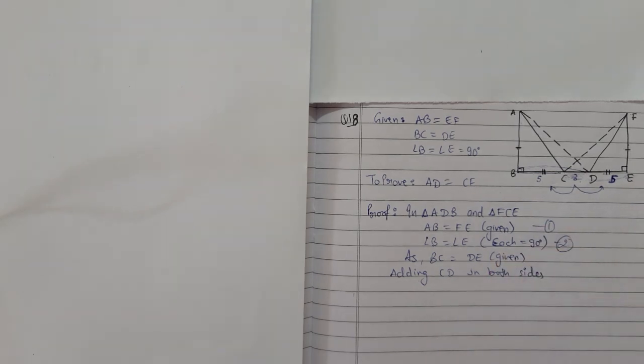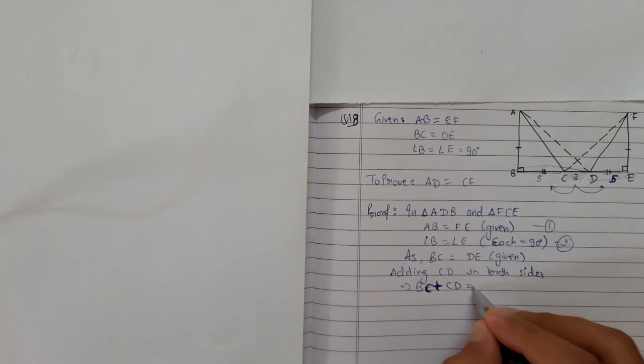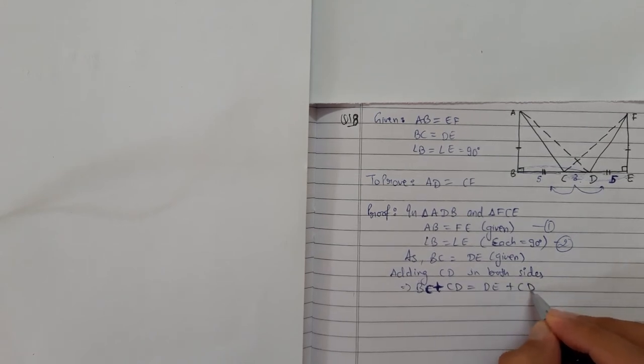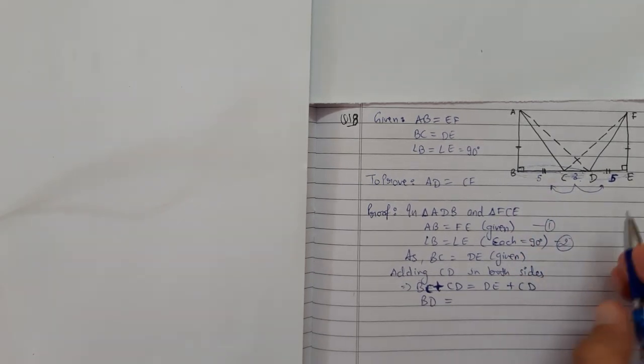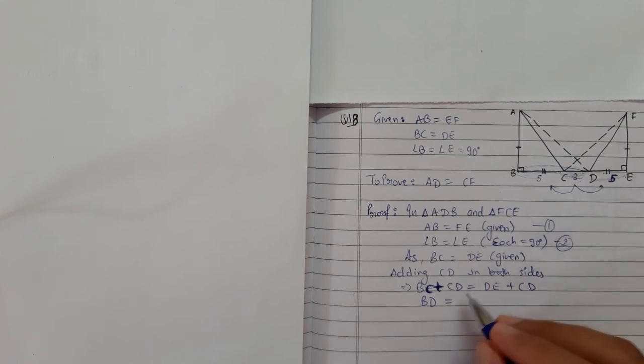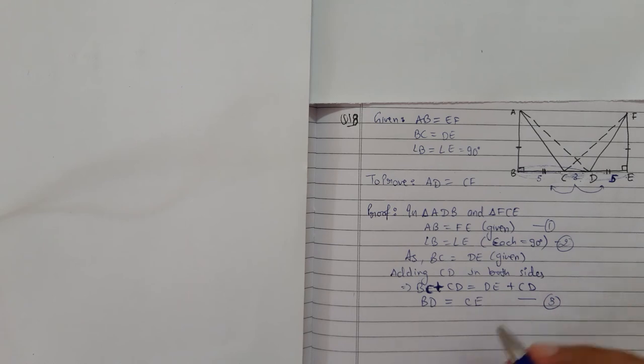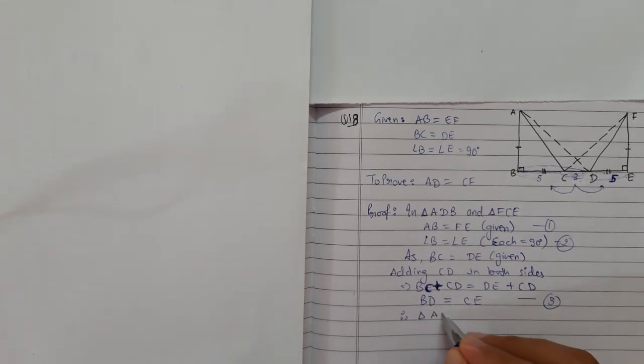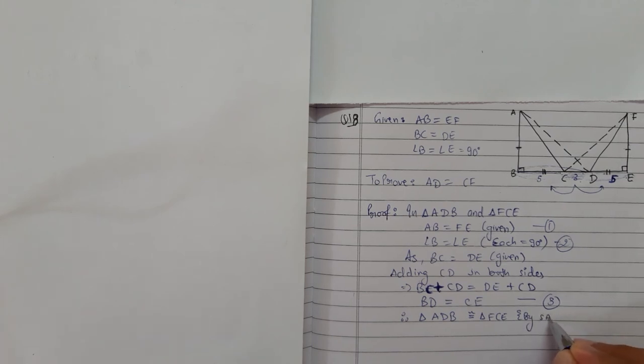BC plus CD equals DE plus CD. BC plus CD is BD. DE plus CD is CE. So we got the third thing. We have side-angle-side. Therefore, triangle ADB is congruent to triangle FCE by side-angle-side.